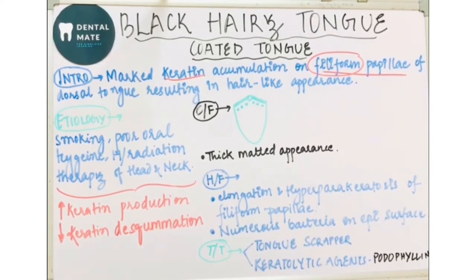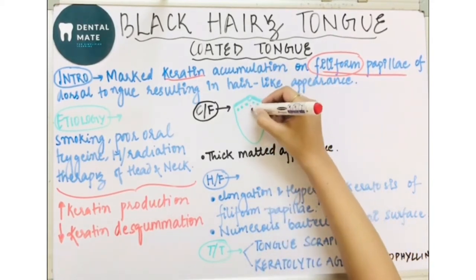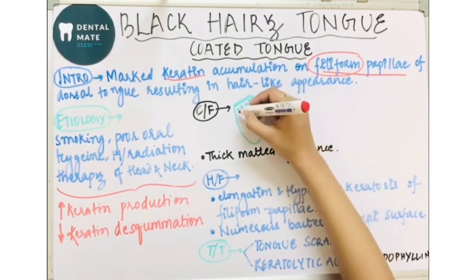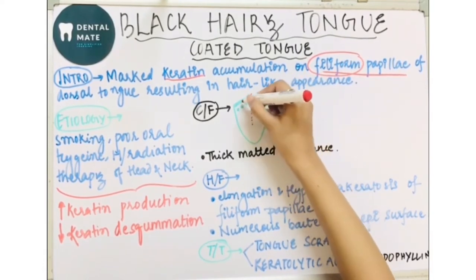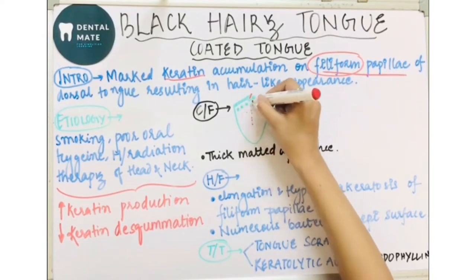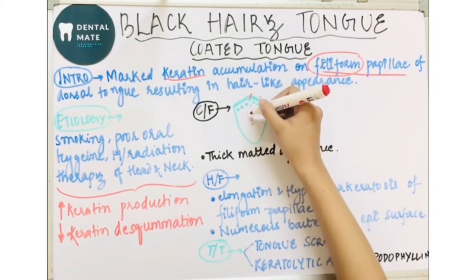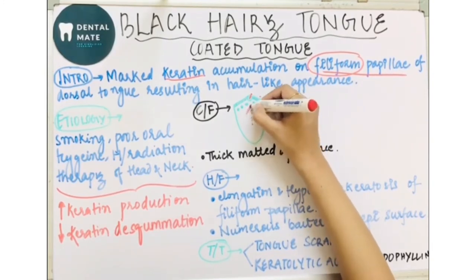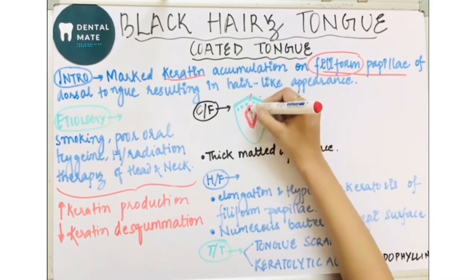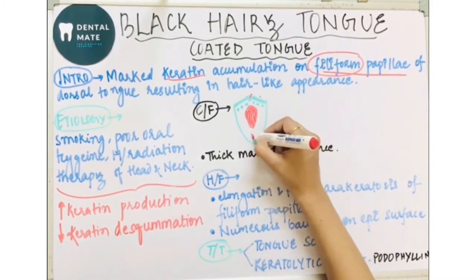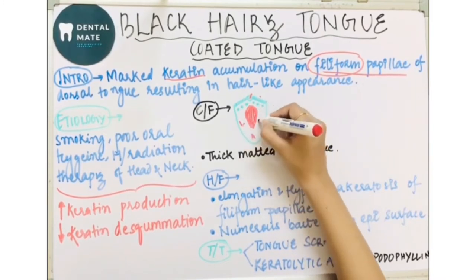Coming on to the clinical features: it most commonly affects the midline, which is just anterior to the circumvallate papillae. This is the sulcus terminalis, this is the foramen cecum, and this is the anterior circumvallate papillae. It affects the anterior midline and the filiform papillae most commonly.